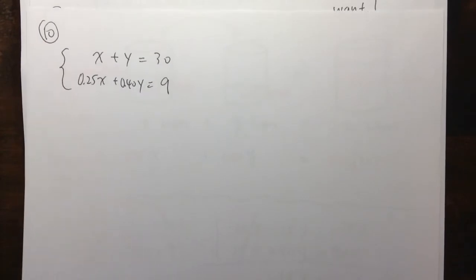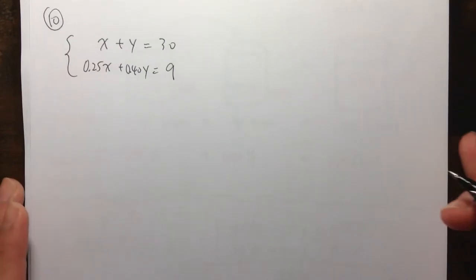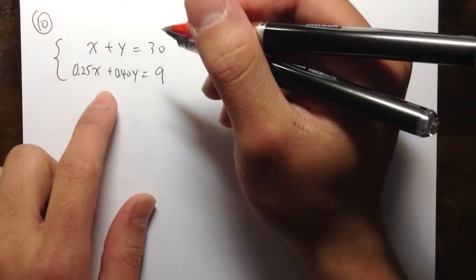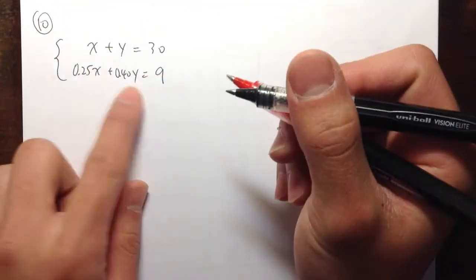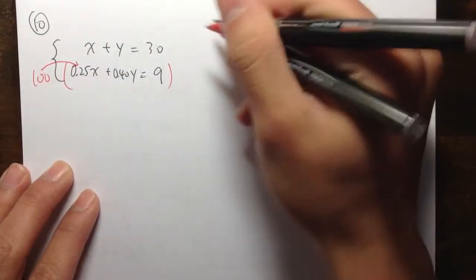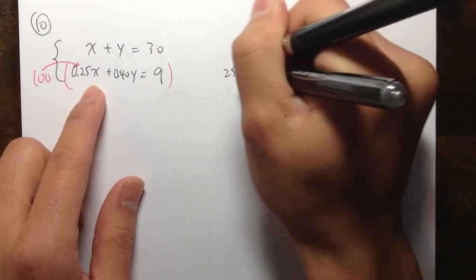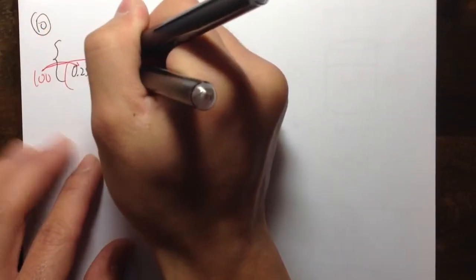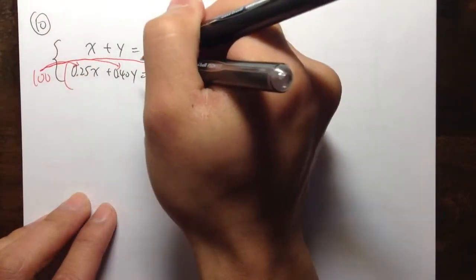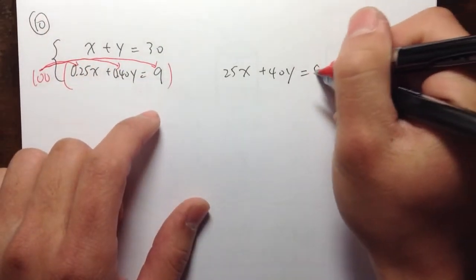So, here, let's do this by substitution instead of elimination. As usual, on the second equation, we have decimals. So, let's multiply everything by 100. And when you do 100 times this, you get 25x, 100 times 0.40y, you get 40y, 100 times 9, that's equal to 900.